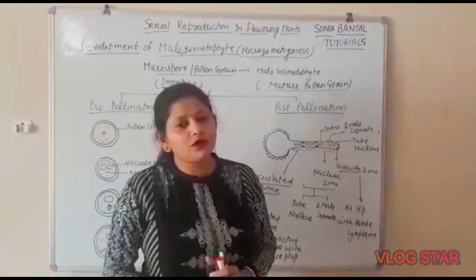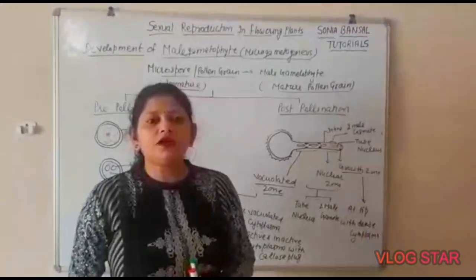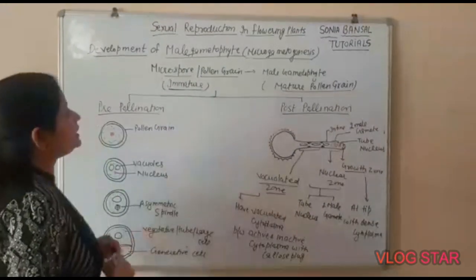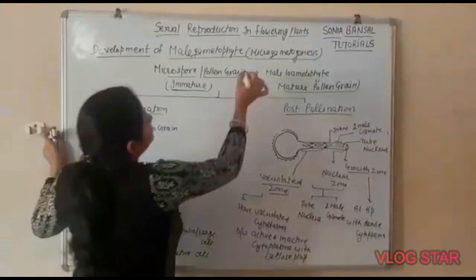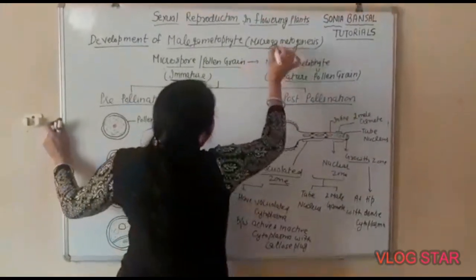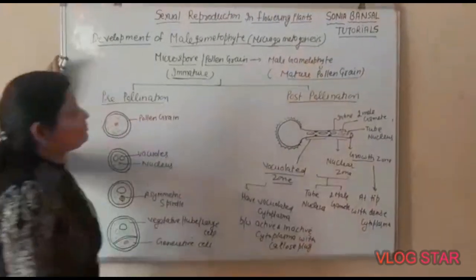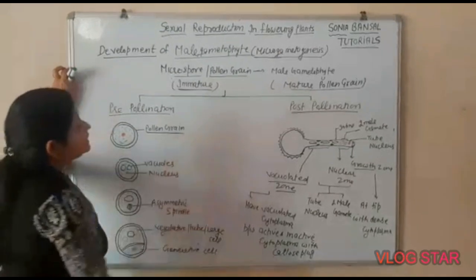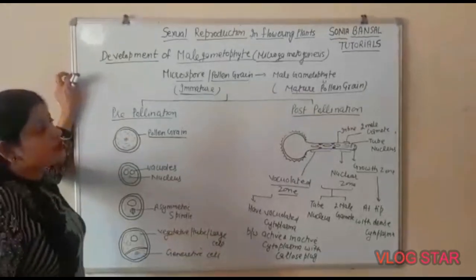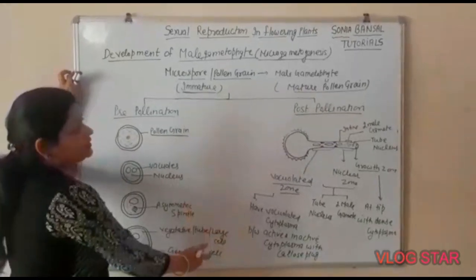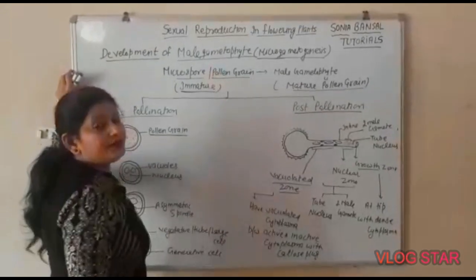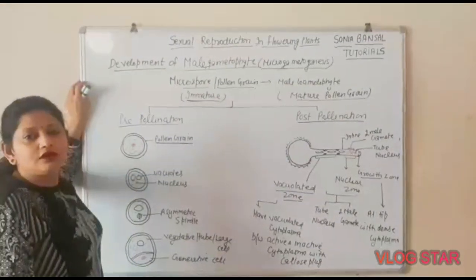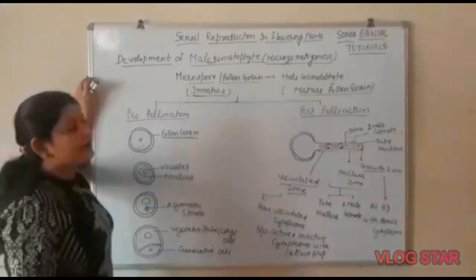The pollen grain helps in the formation of the male gametophyte. The formation of the male gametophyte is called microgametogenesis. When the pollen grain undergoes the process of maturation, it helps in the formation of the male gametophyte. The mature pollen grain is called the male gametophyte.